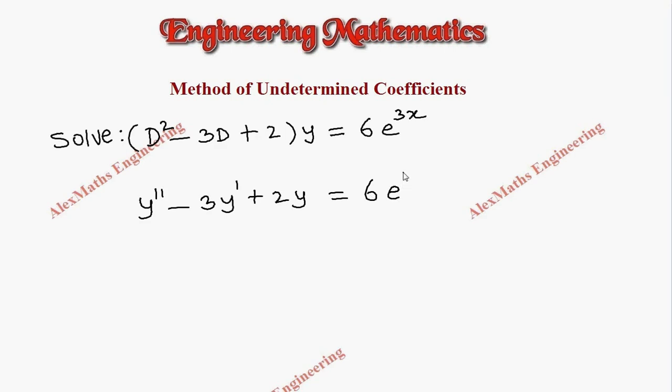Now the auxiliary equation is m² - 3m + 2 = 0. On factorizing this we get (m - 1)(m - 2) = 0.